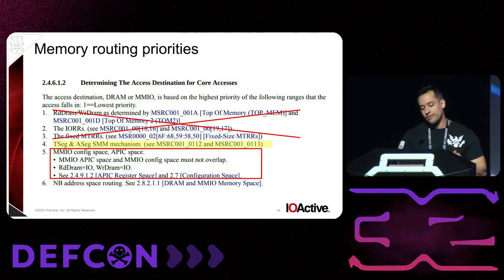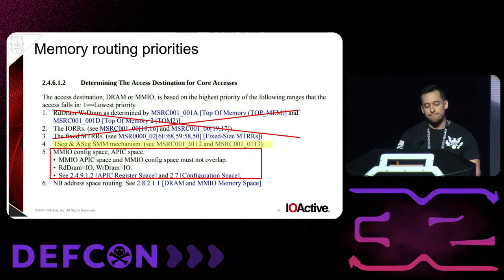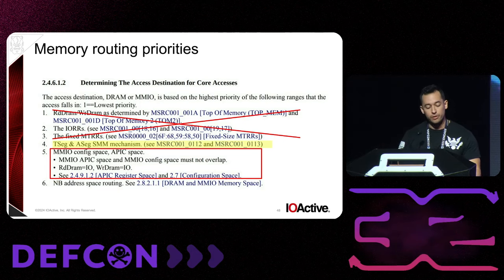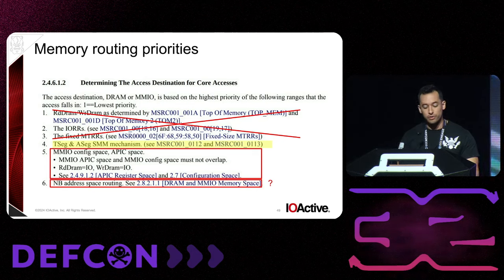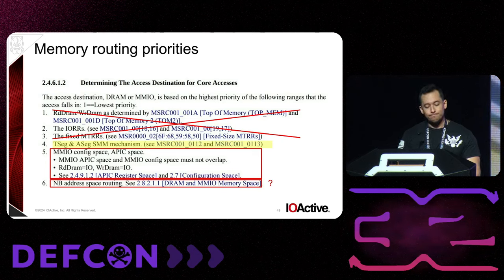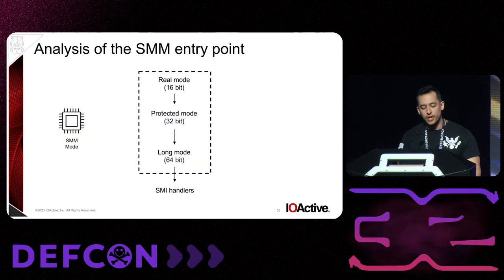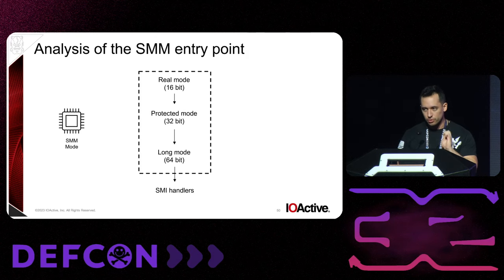At position five, we have the MMIO configuration space and the APIC. The APIC was used before in the Intel attack. The MMIO config space we cannot use. At position six we have the Northbridge address space routing, but that's for older architectures — not seen in modern systems. For the APIC, we cannot really use it, and we're going to explain why. For that, we need to analyze how the SMM entry point code works.